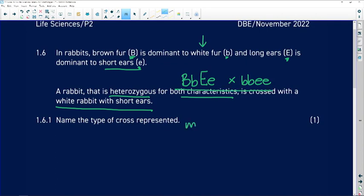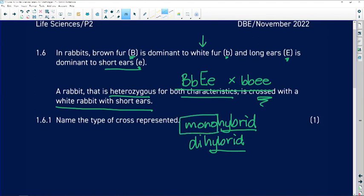You've got two kinds of crosses that you've learned about: monohybrid and dihybrid. The hybrid part of the word refers to crosses, and the mono refers to one and the di to two.